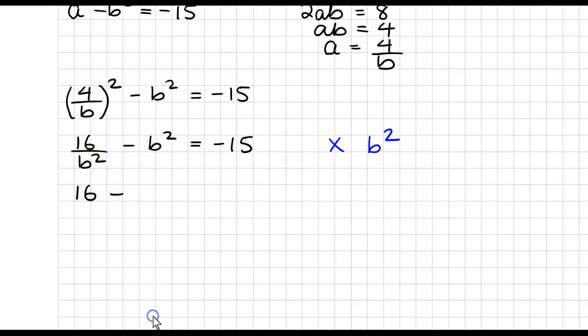So 16, now B squared times another B squared is going to give me B to the 4, and don't forget you have to also put that at the other side of the equation. So minus 15 B squared.